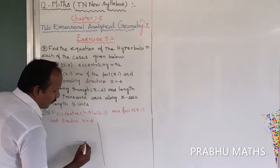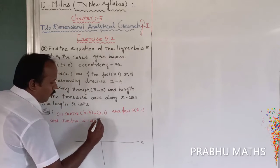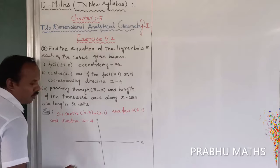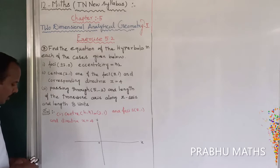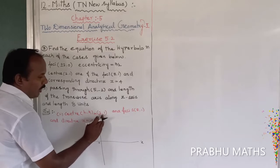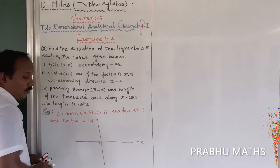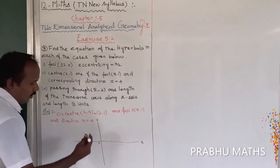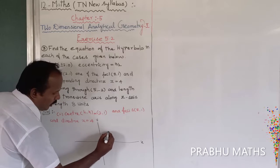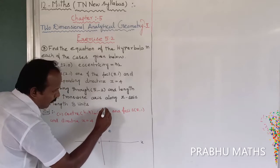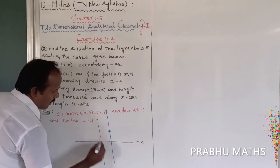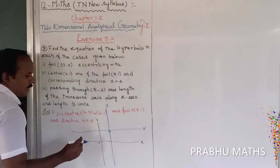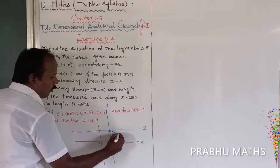Now let us draw the diagram on the graph sheet. The x-axis and y-axis are drawn. The center of the hyperbola is at (2, 1), so we set up a shifted axis system — called the x-dash, y-dash axes — centered at (2, 1).